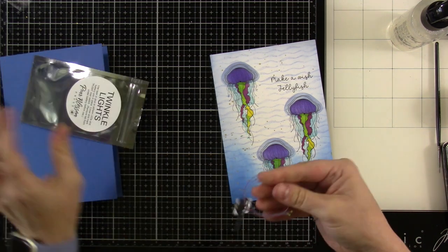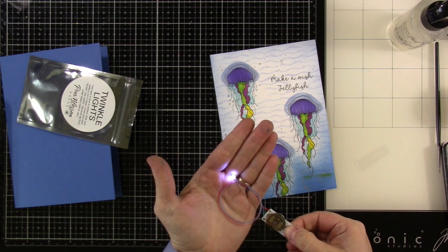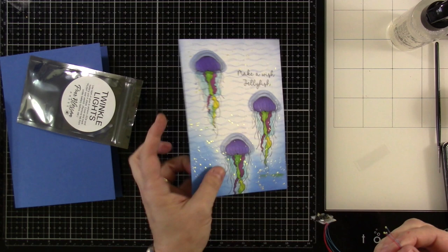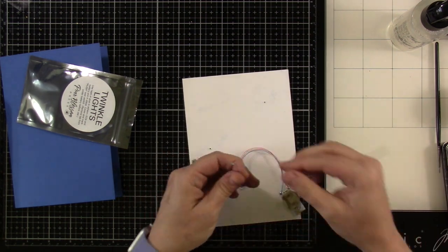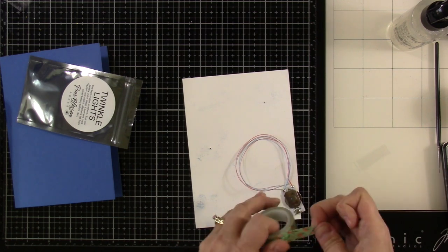All right. So what you saw was me poking some holes in our jellyfish. And those holes are going to be for our twinkle lights. I just pulled out the little piece that keeps the battery from being connected. Hang on to that so that you can put that back in there if you need to for mailing this baby out.